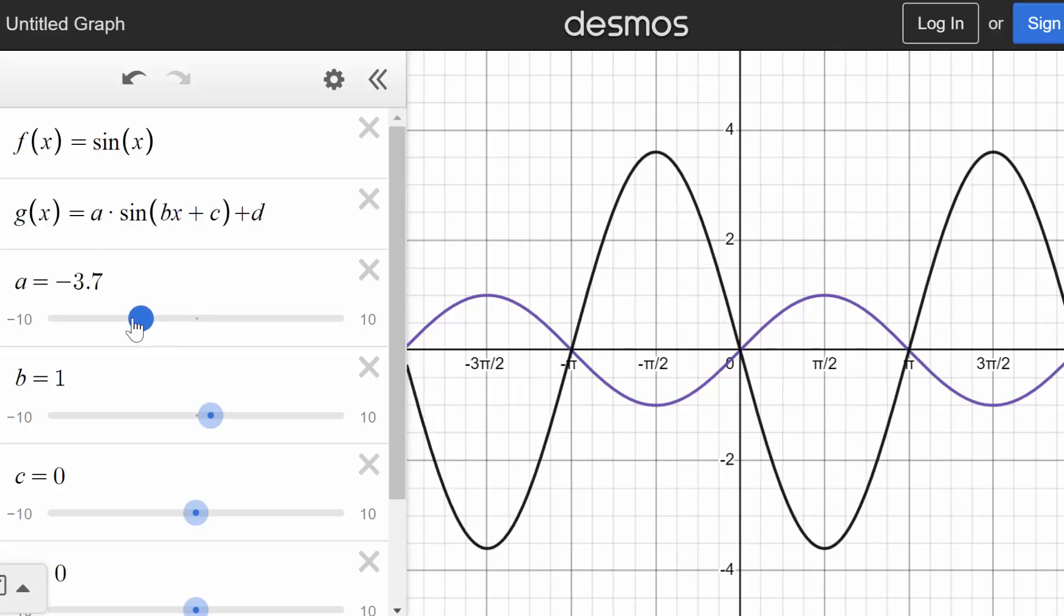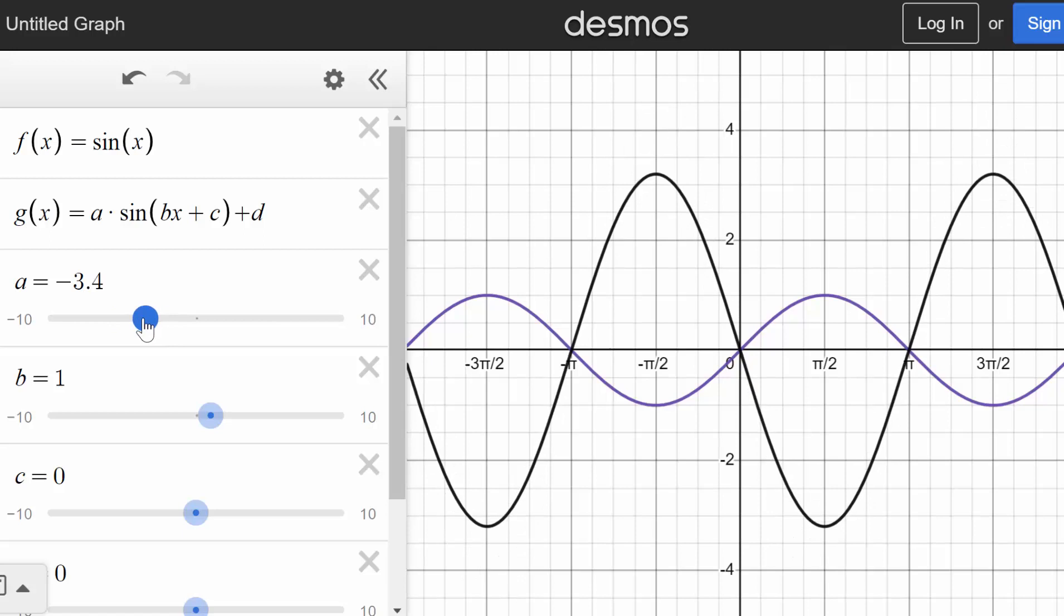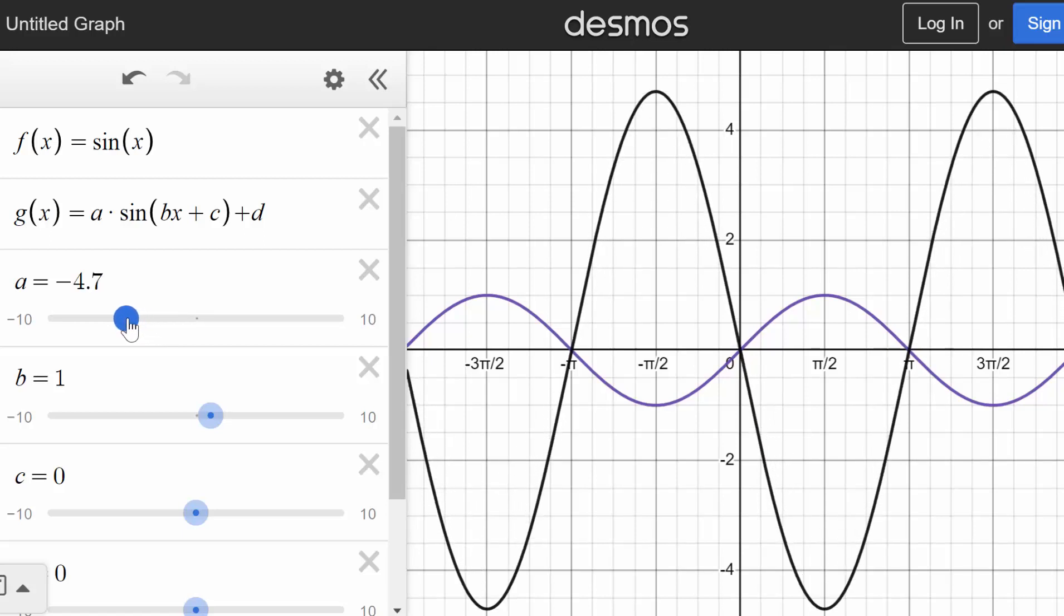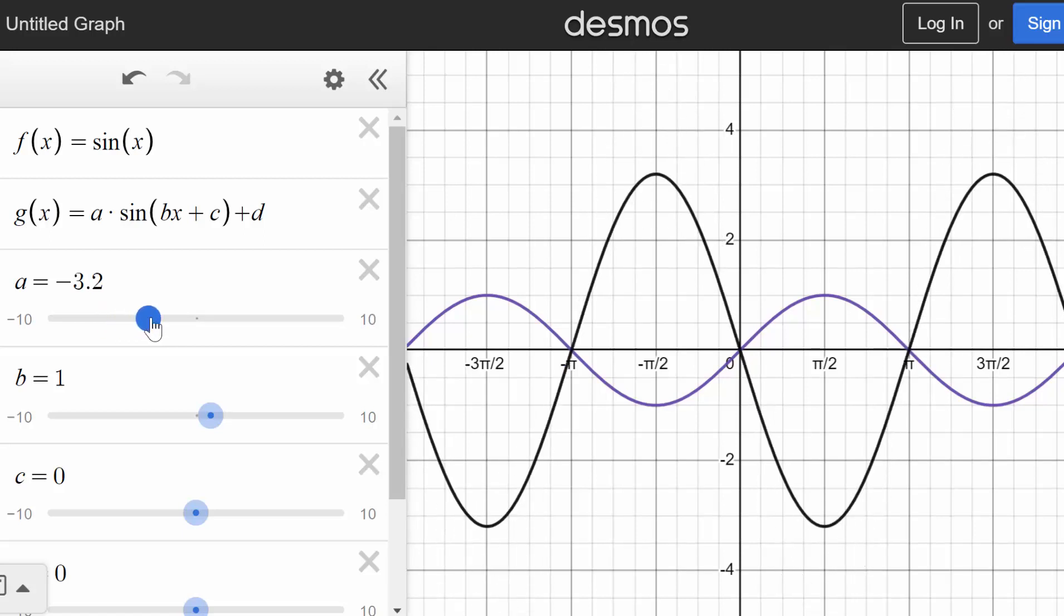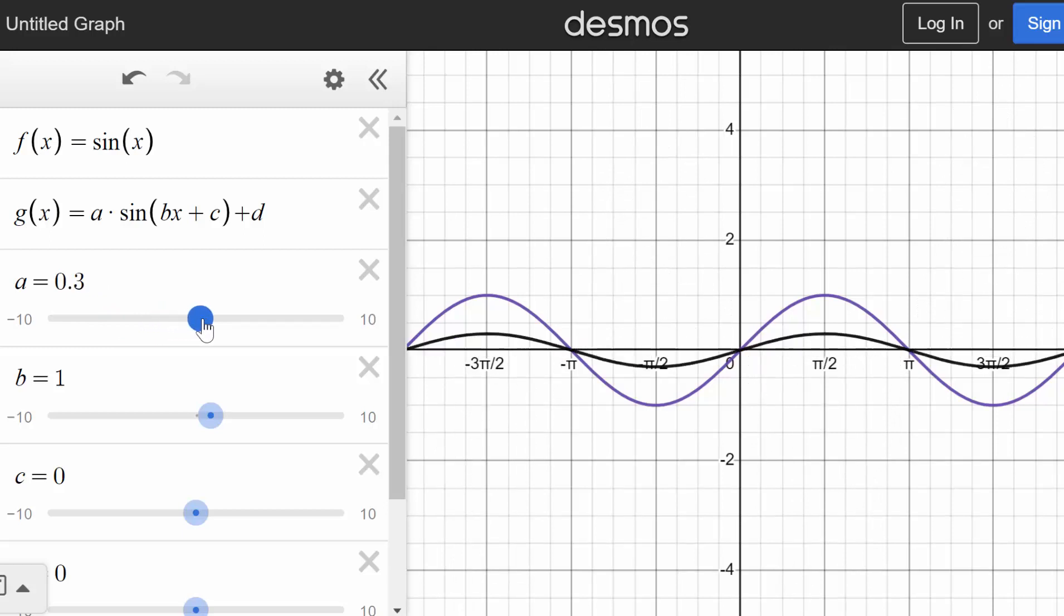Since if it's a negative number and it's smaller than negative 1, it will have an amplitude greater than 1. We can see that here. So let me put this back to the parent function value at 1.